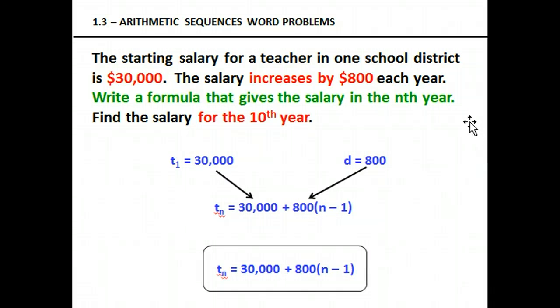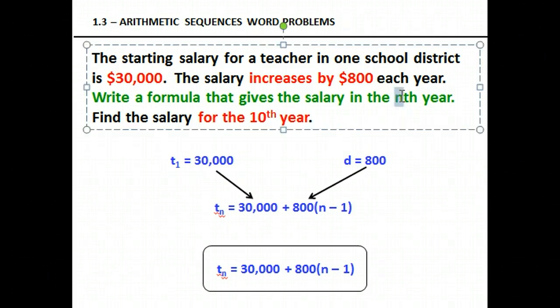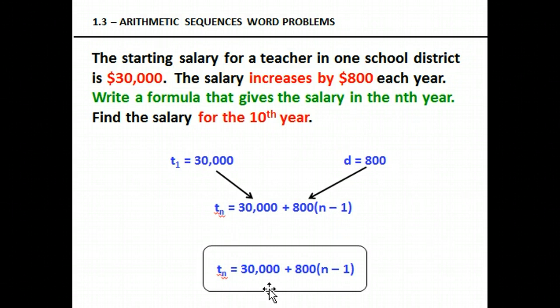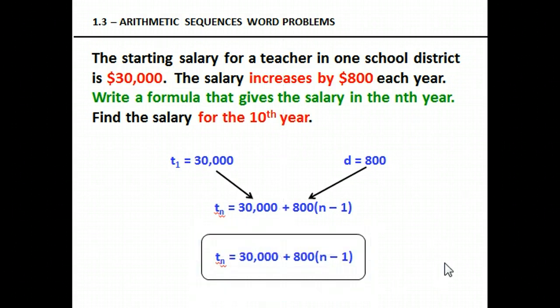When it says write a formula that gives the salary in the nth year, whenever it says this nth term, you're going to leave the n's as n. So then this right down here is indeed your final answer.